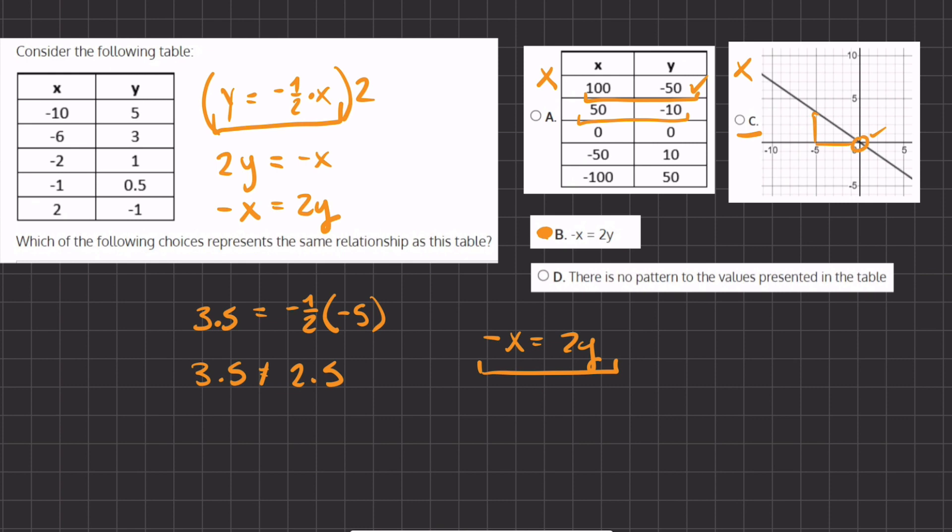And D says there is no pattern to the values presented in the table, and that is incorrect because we just found a pattern. Alright, so B is our final answer.